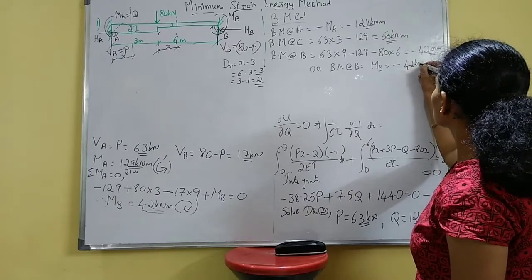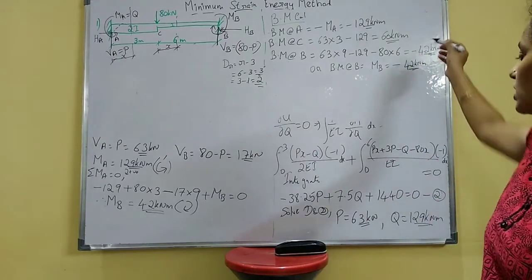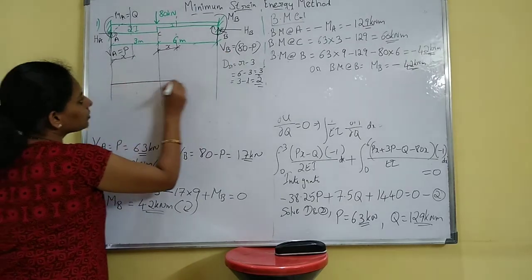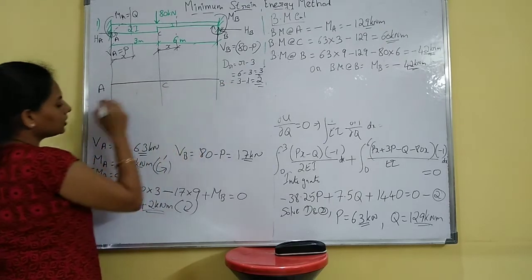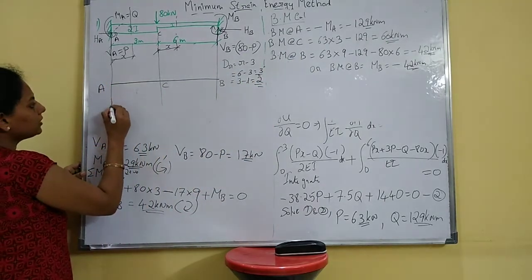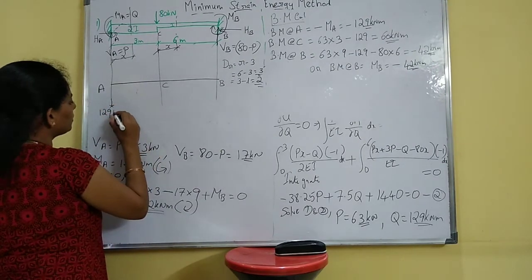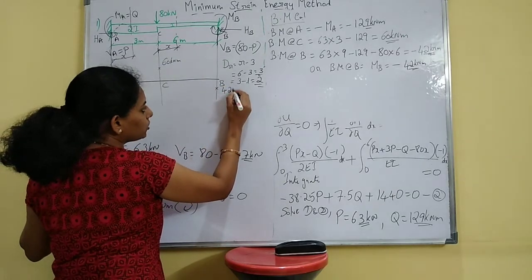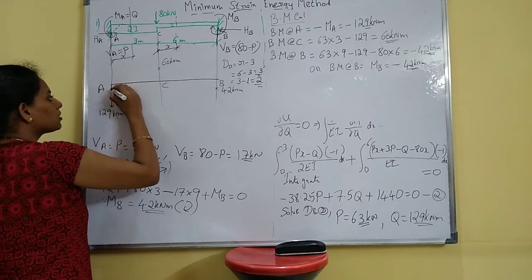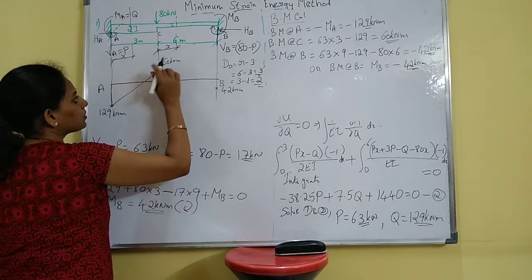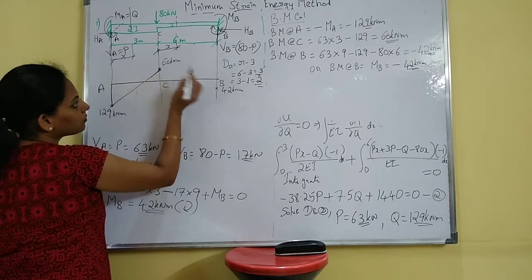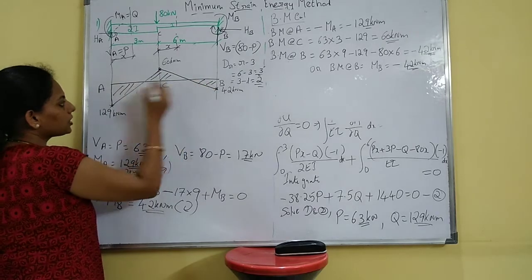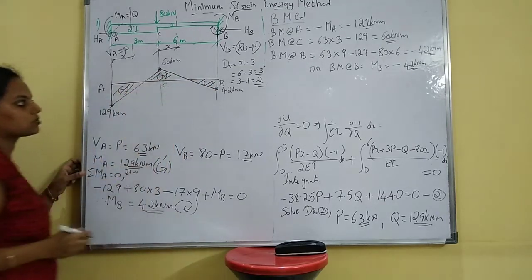So the values check out — both methods give the same answer. Draw the BMD: at A you have −129, at C you have +60, at B you have −42. Since it is a point load, draw straight lines. This gives the bending moment diagram with negative regions at A and B and a positive region at C.